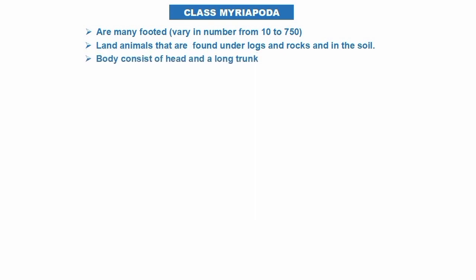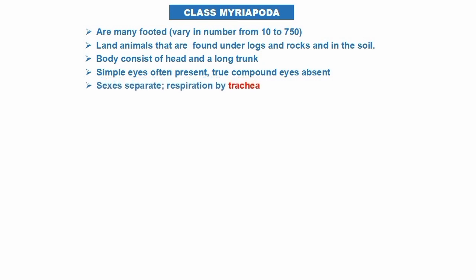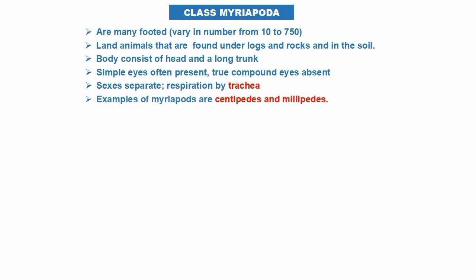The body consists of a head and a long trunk. Simple eyes are present, though sometimes absent. Sexes are separated. Examples of Myriapoda are centipedes and millipedes. We will talk about these two main classes of Myriapoda right now.